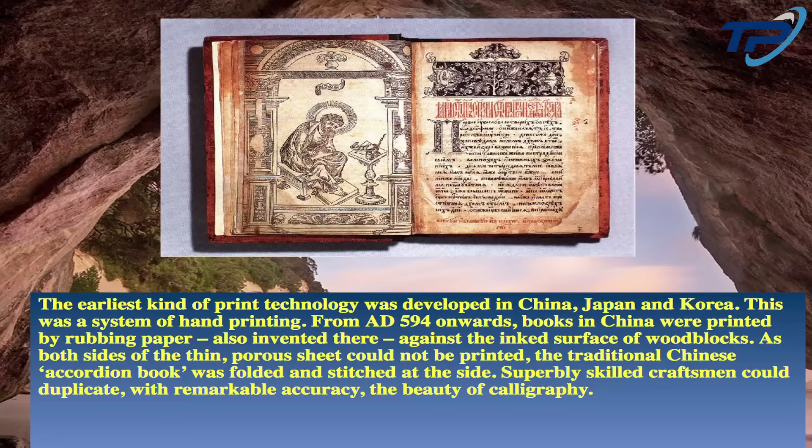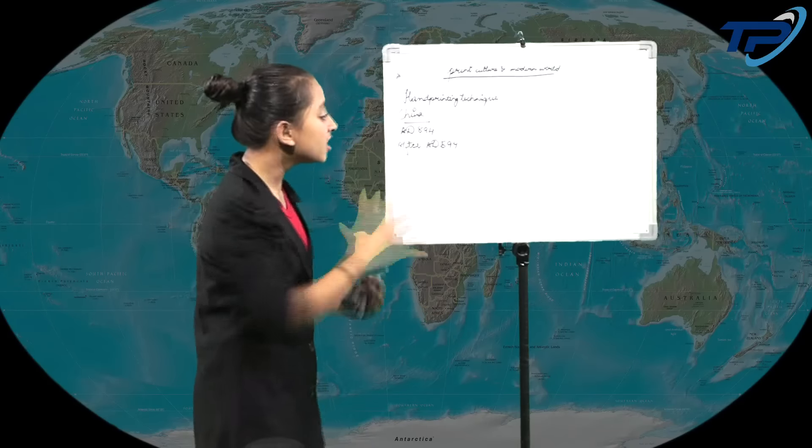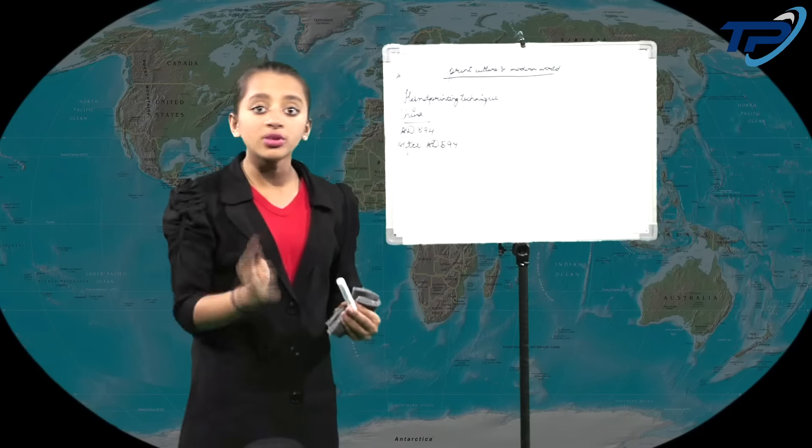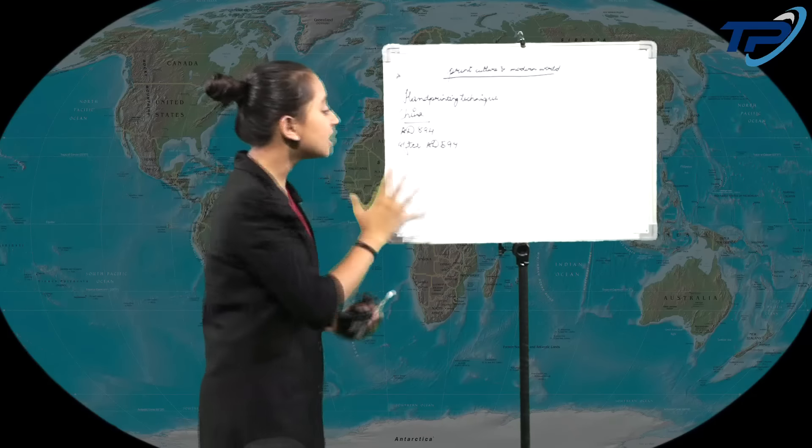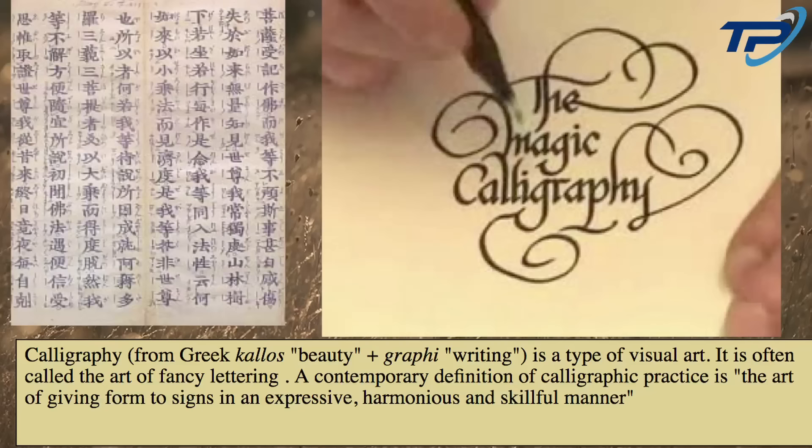This wood block printing was a system in which the paper was rubbed against wood block ink surfaces. This provided the impression on the paper. There was another prevalent term at that time known as calligraphy - the art of beautiful and stylish handwriting.